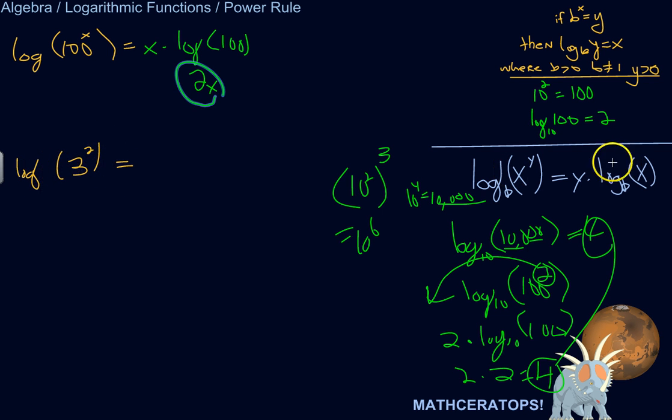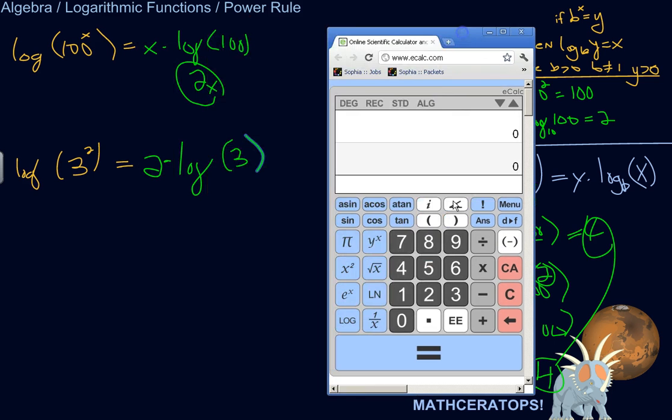Let's try another one. So the power rule is telling me that this expression is equivalent to 2 times log base 10 of 3. Now I could just take log base 10 of 3 on my calculator and then multiply by 2. Boom. 0.95 something, right?